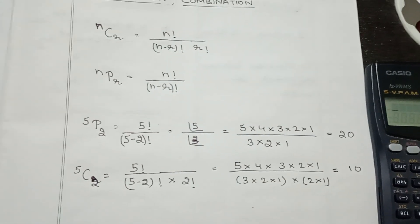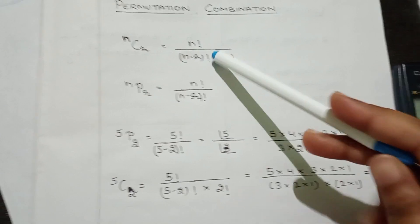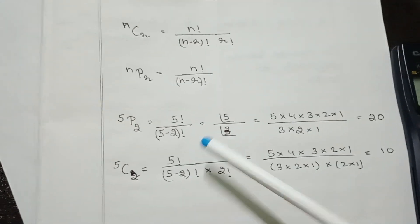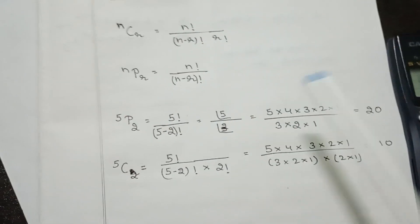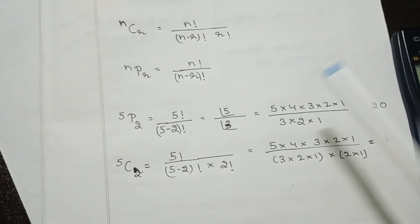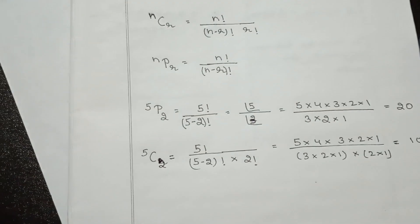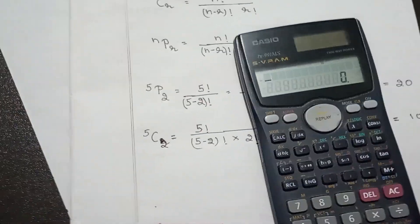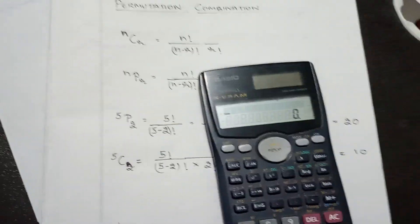Permutation and combination, which we have learnt in school using formulas — for example, 5 factorial can be represented in different ways. This is what we get after doing the manual calculation. We can do the same thing in the FX 991 MS without doing any manual calculations, which is very helpful in engineering problems.